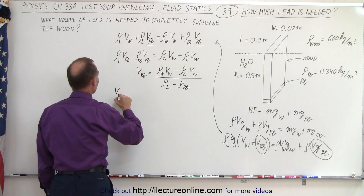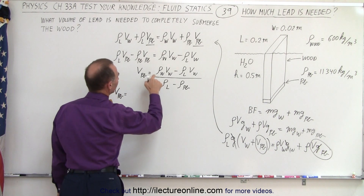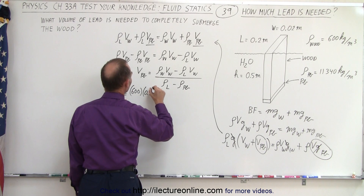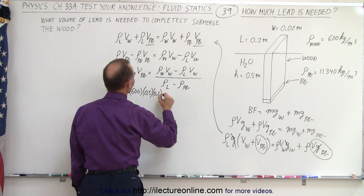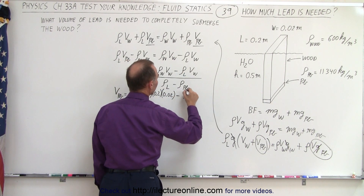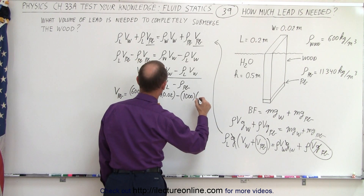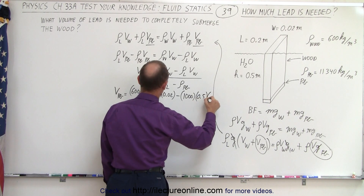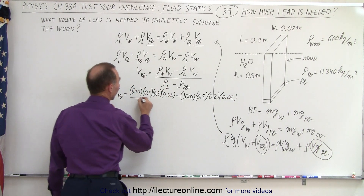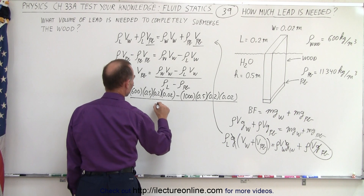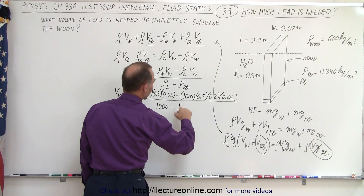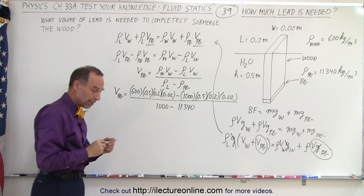Now we plug in the values. Volume of the lead equals: density of the wood (600) times volume of the wood (0.5 × 0.2 × 0.02), minus density of the liquid, which is water (1,000), times the volume of the wood (0.5 × 0.2 × 0.02), all divided by the density of the liquid (1,000) minus the density of the lead (11,340).